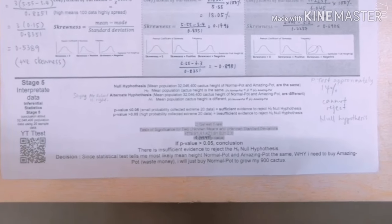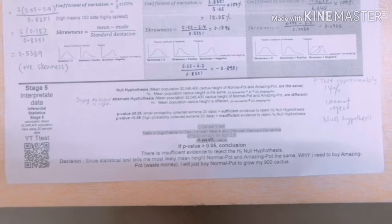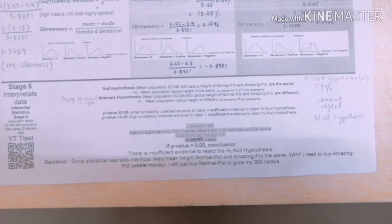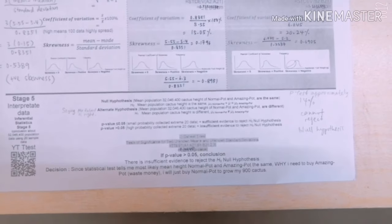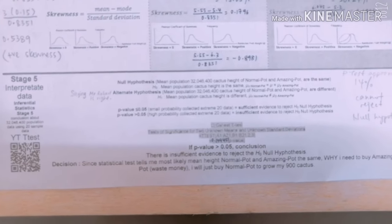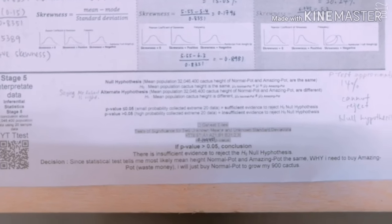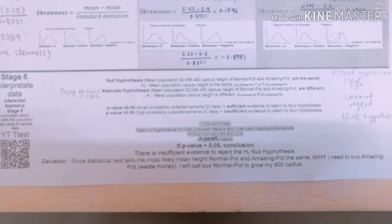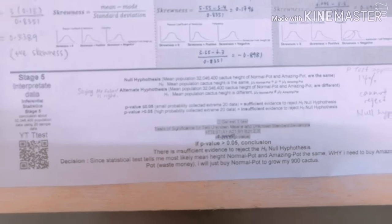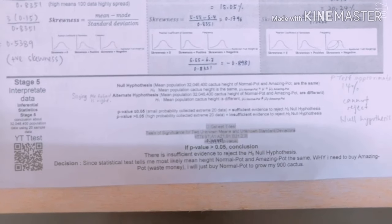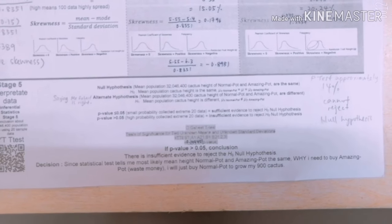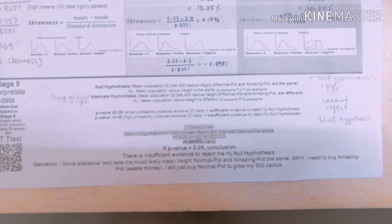For stage five, it is stated that the value of p-test is approximately 14%. Therefore, there's insufficient evidence to reject the null hypothesis because the p-value is more than 0.05. So the final decision is since statistical tests tells me most likely mean height normal pot and amazing pot are the same.